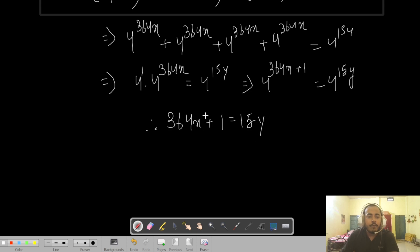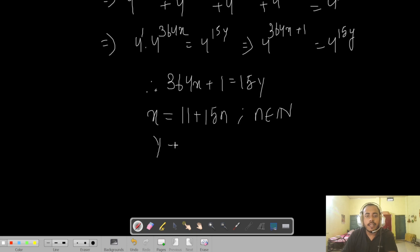Now we need positive solutions, and with a little investigation you can find the positive solutions. x would work if we have the term 11 plus 15n for positive integers n. We can use this form of x, and y can also be written as 267 plus 364n where n belongs to natural numbers.